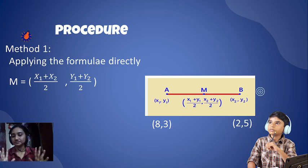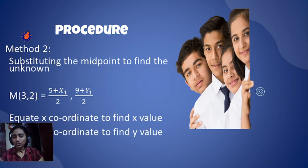The first method is to apply the formula directly. This is the formula for the midpoint. A and B coordinates will be given. For the midpoint coordinate, simply apply the formula using the A and B coordinates like this.